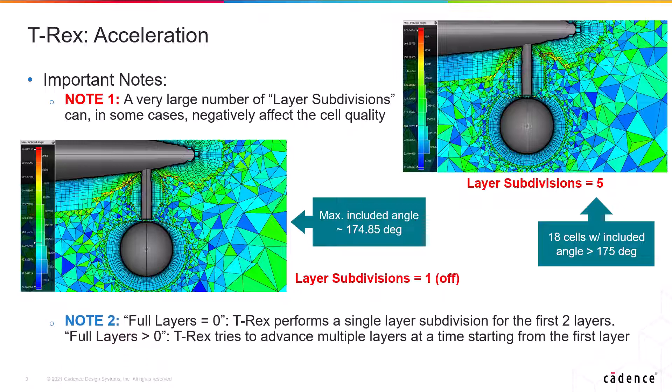Also, with full layer set to 0, T-Rex will perform a single layer subdivision for the first two layers, regardless of the choice of acceleration. However, with full layer set to a value greater than 0, like we saw for the simple block example, T-Rex will try to advance multiple layers at a time starting from the first layer.